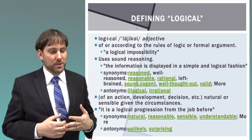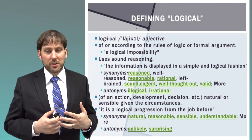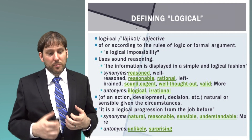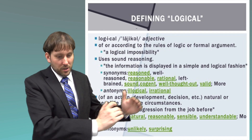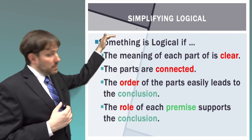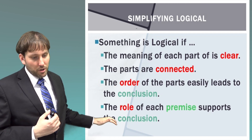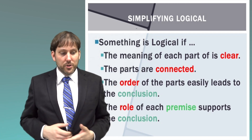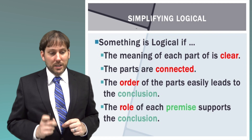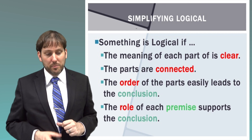Something is logical for the purposes of this class if: the meaning of each part is clear, the parts are connected, the order of the parts easily leads to the conclusion, and the role of each premise supports the conclusion. Those are our four main criteria. This is important and I will repeat it on many slides. Something is logical if the meaning of each part is clear, the parts are connected, the order leads to the conclusion, and each premise supports the conclusion.